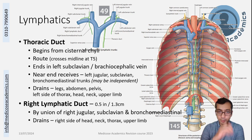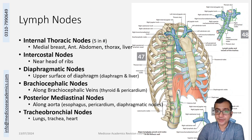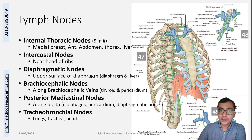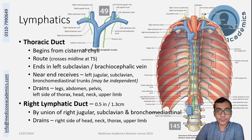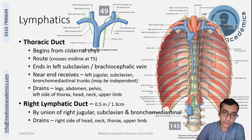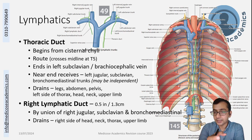Now let's talk about the main lymphatic duct — the thoracic duct. Most of the lymphatics of the thorax ultimately join together to form a duct known as the bronchomediastinal trunk. This trunk ends and goes into one of two things: the right lymphatic duct on the right, or the thoracic duct on the left.